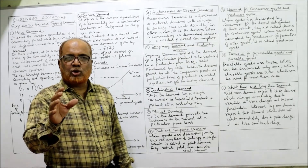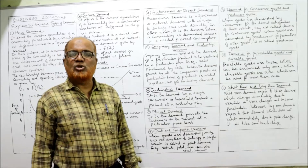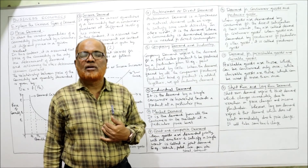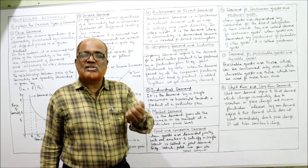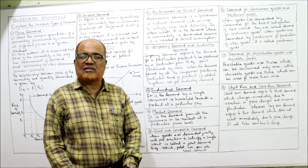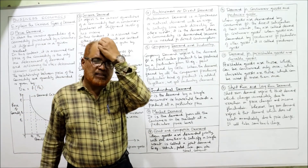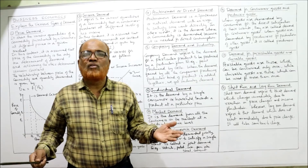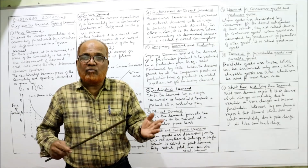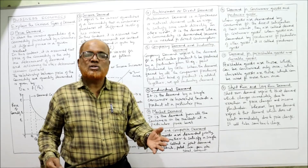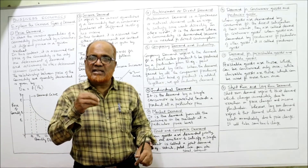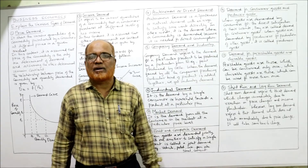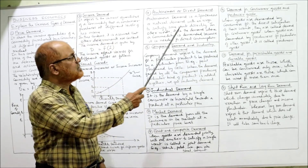The fourth type is autonomous or direct demand — the demand for a product directly consumed by the consumer to satisfy a want. For example, when I purchase petrol for my bike, my demand is fulfilled because I need it. If I am hungry and I take food, my want is satisfied. Any demand that directly satisfies a consumer's want is called autonomous or direct demand.